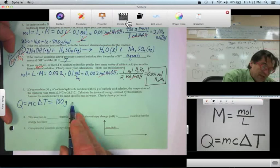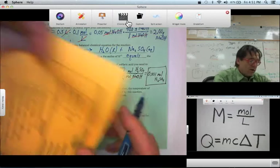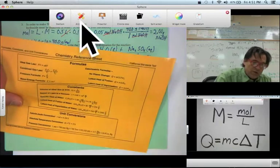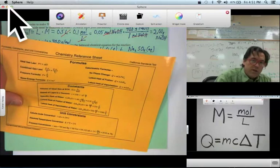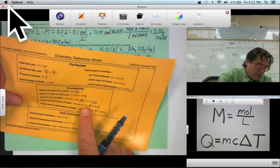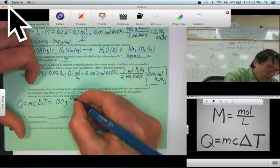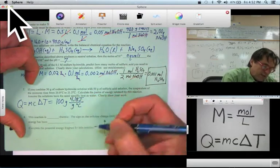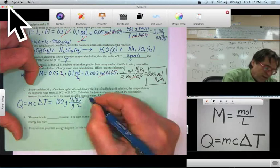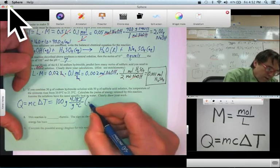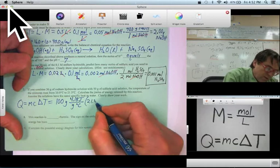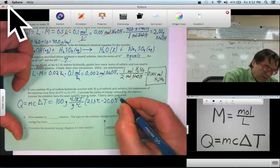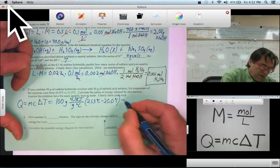Same specific heat of water as water. Looking that up on our reference sheet. They ask for it in joules, so the most convenient thing would be to use joules, 4.18. 4.18 joules per gram degrees C is our specific heat, and our delta T is T final, 21.3 degrees C minus T initial, 20.0 degrees C. And that is all our data.